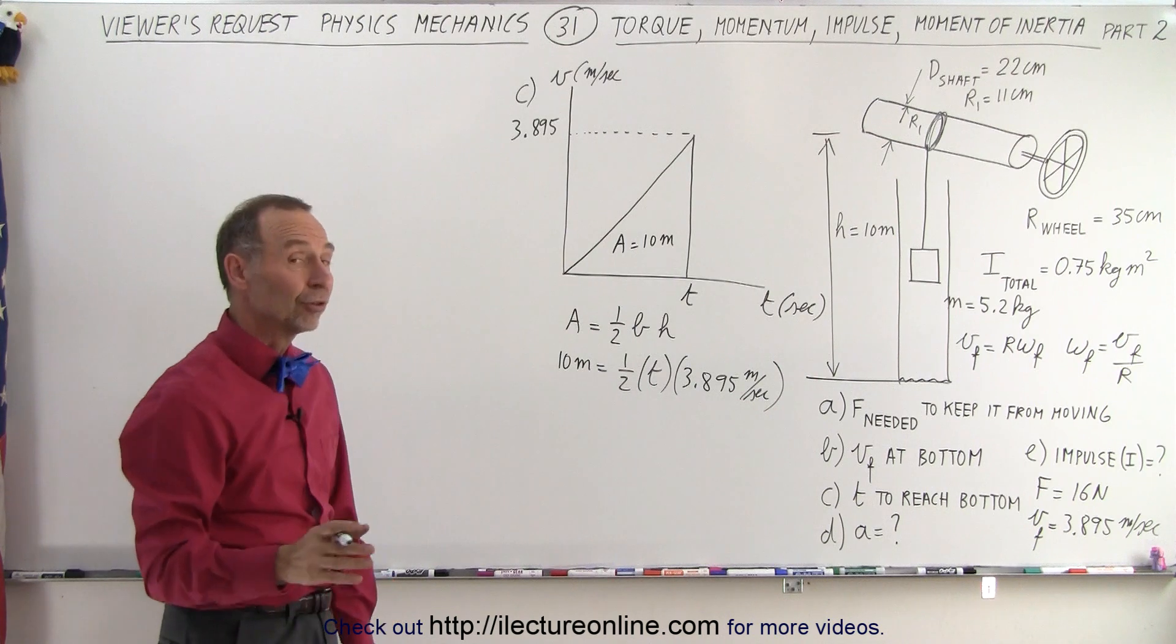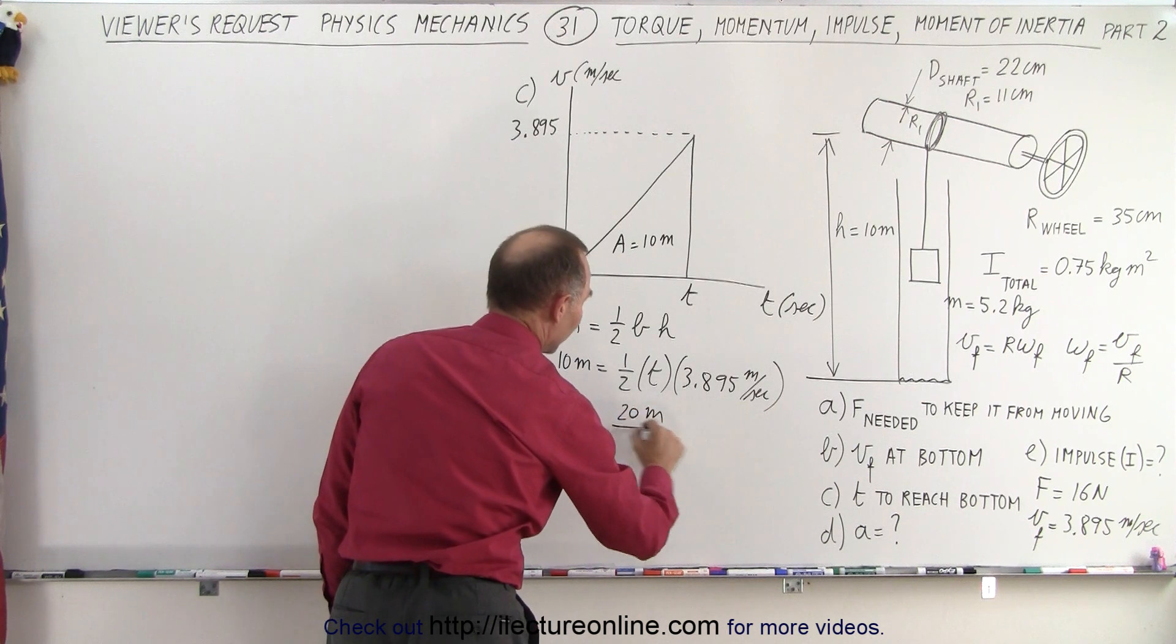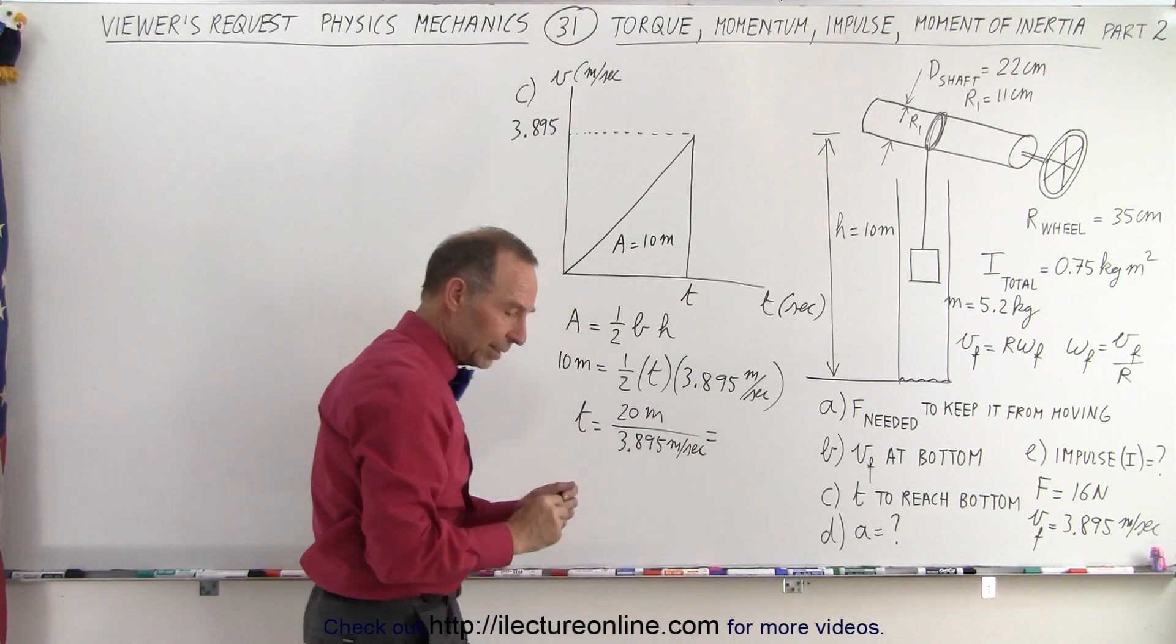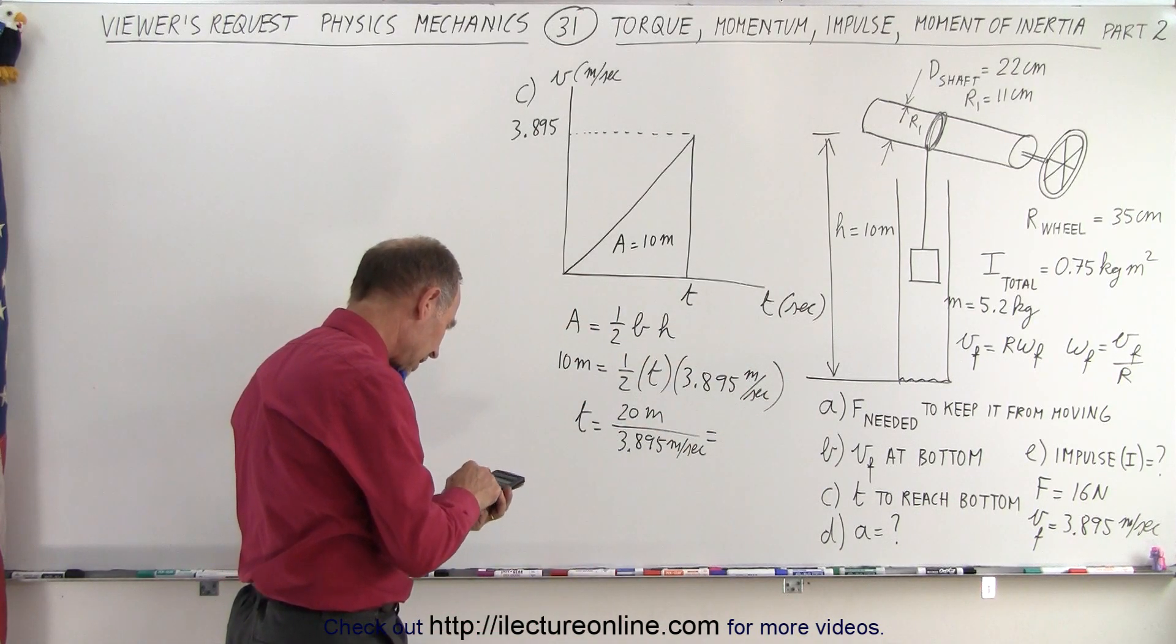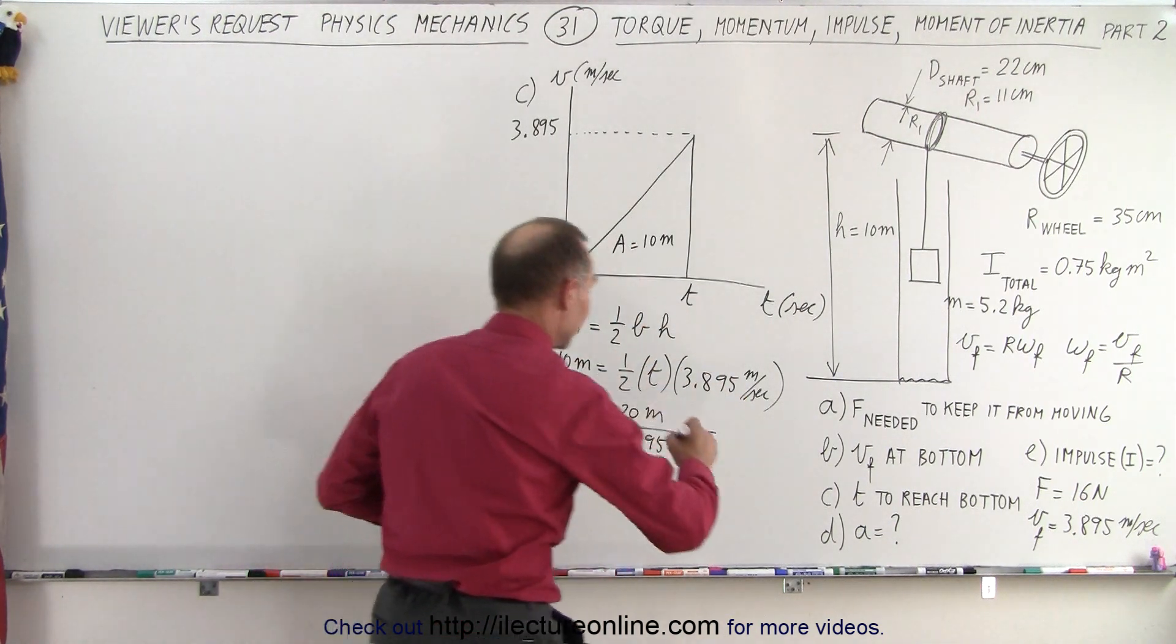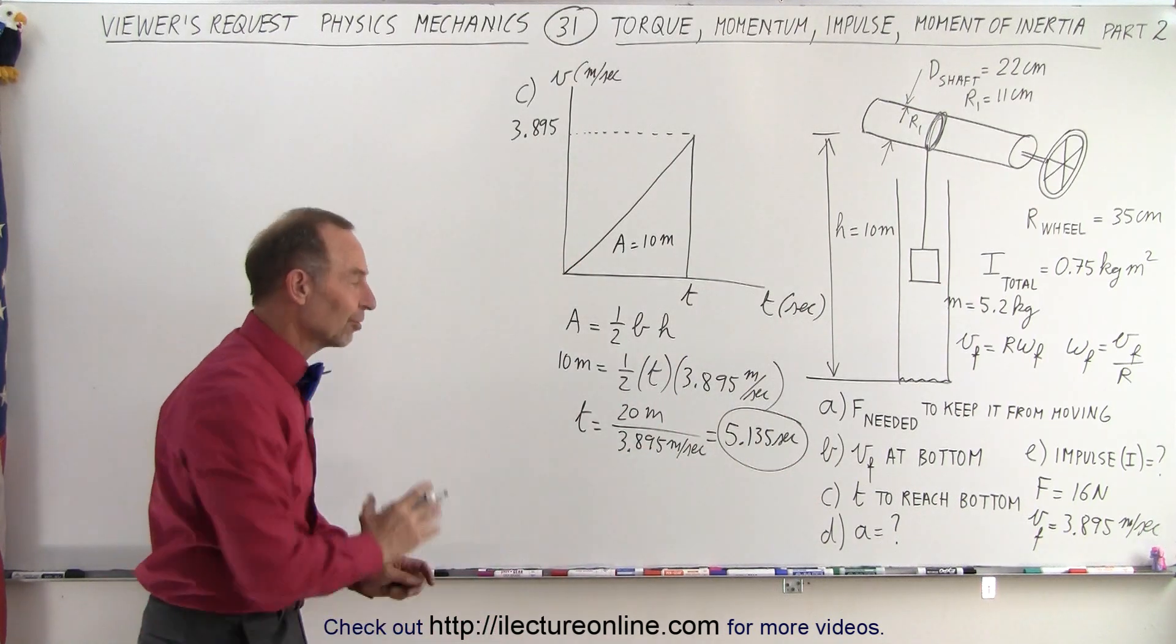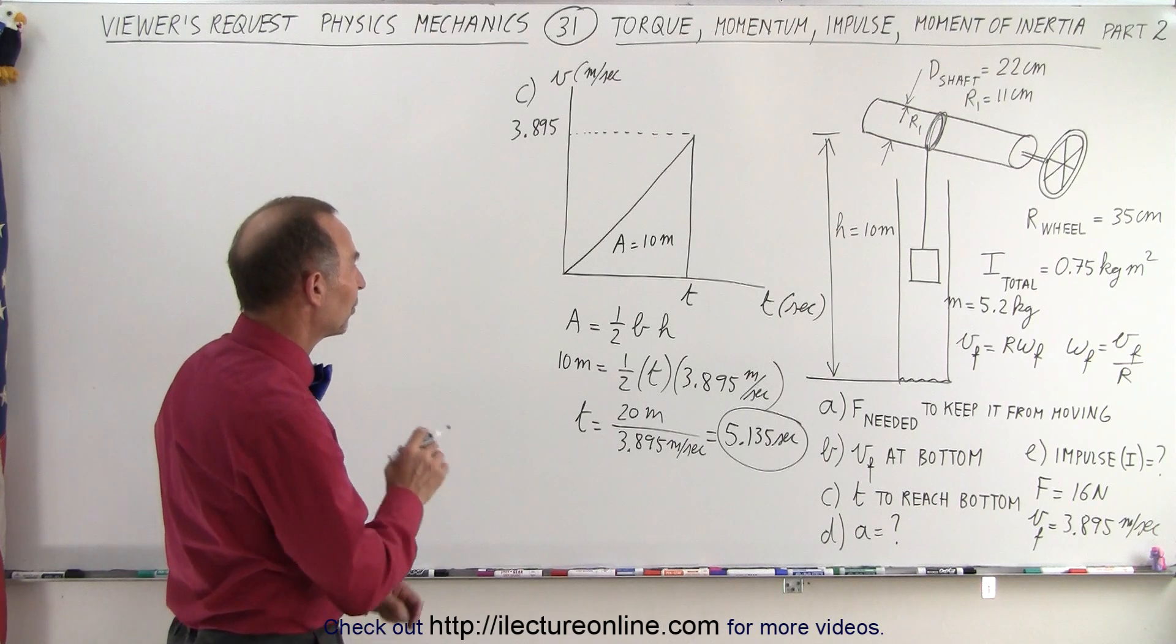That should allow us to find T because now we know that T is equal to 20 meters divided by 2 times 10 is 20 meters divided by 3.895 meters per second. And with a calculator, 20 divided by 3.895 equals 5.135 seconds. 5.135 seconds. Again, I included a few extra non-significant figures just so that I don't have an error if I use that number for something later. So this is part C.